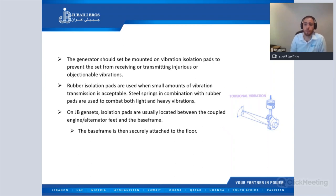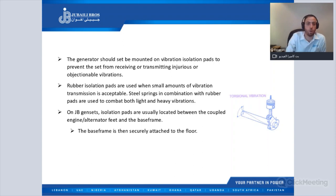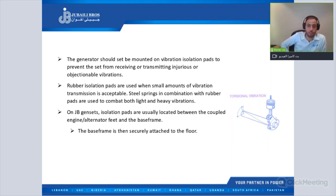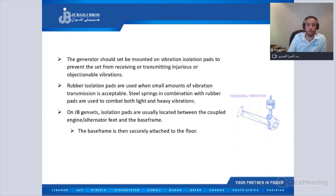Now we'll talk about generator mounting and anti-vibration. The generator should be mounted on vibration isolation to prevent the set from receiving or transmitting injurious or objectionable vibration. We have to install rubber mounting under the generator set before putting it inside the room. There are two types of anti-vibration isolation.